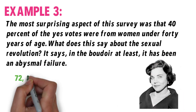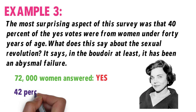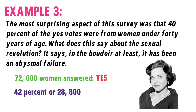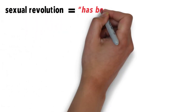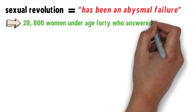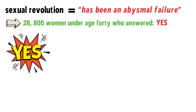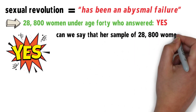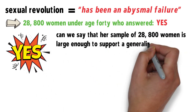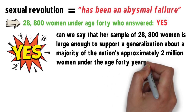Landers reports that 72,000 women answered yes, and that, of that group, 42%, or 28,800, were under 40 years of age. She concludes that the sexual revolution has been an abysmal failure on the basis of the 28,800 women under age 40 who answered yes. Setting aside the problems in the survey question itself, and in particular the meaning of a yes answer, can we say that her sample of 28,800 women is large enough to support a generalization about a majority of the nation's approximately 2 million women under the age of 40?